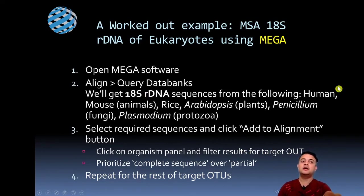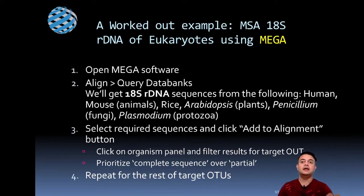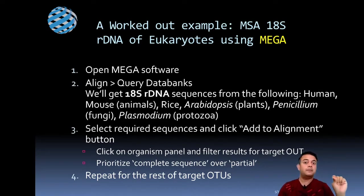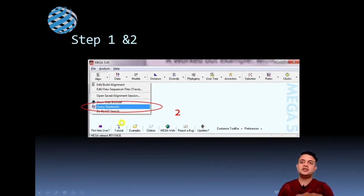Searching for '18S' and 'human' may also return mouse results because NCBI search is not as refined as Google. To fix this, use the organism panel to limit your search only to Homo sapiens. It's always better to prioritize complete sequences over partial ones — some sequences are labeled 'partial' and some 'complete,' so always choose the complete sequence. Repeat the same steps for the rest of your target OTUs — operational taxonomic units, such as species or genus — depending on your study.